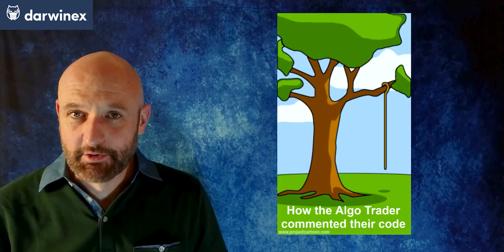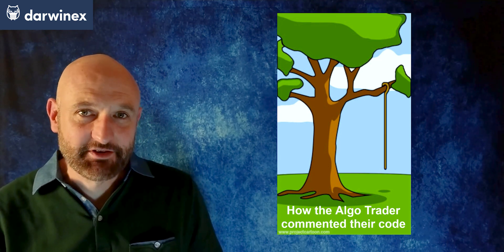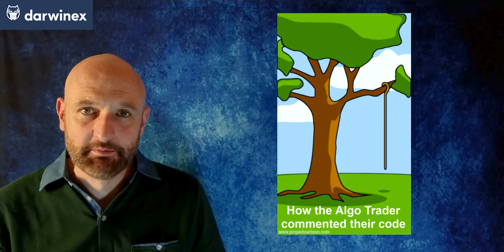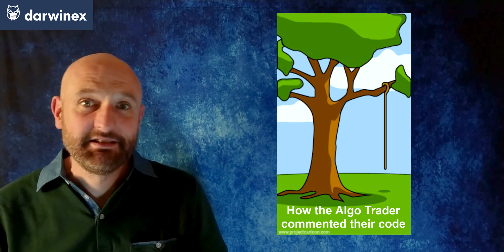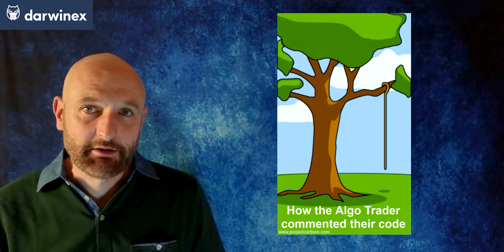First up, how the algo trader commented their code. This image represents the fact that many traders don't put enough time and effort into the commenting of their code. This of course goes hand in hand with the lack of quality documentation that we talked about last time.